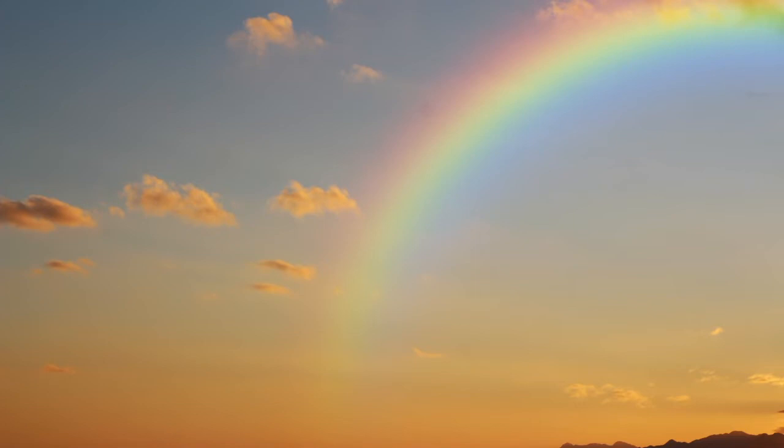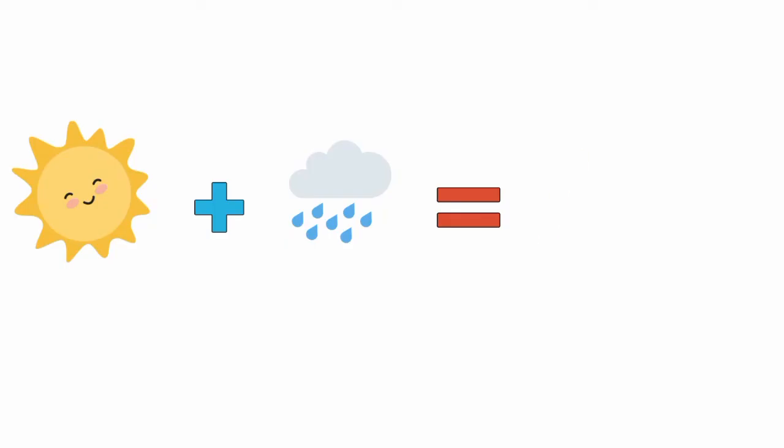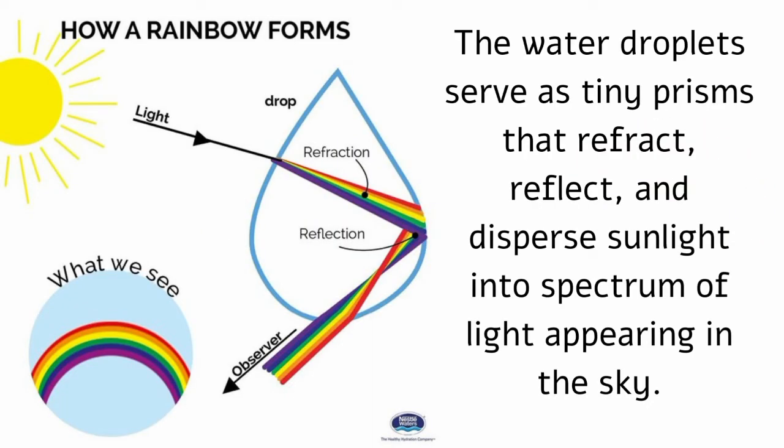You can see these colors when you look at a rainbow in our sky. A rainbow is caused by both the reflection and refraction of light in water droplets in the Earth's atmosphere. The water droplets serve as tiny prisms that refract, reflect, and disperse some light into spectrum of light appearing in the sky.